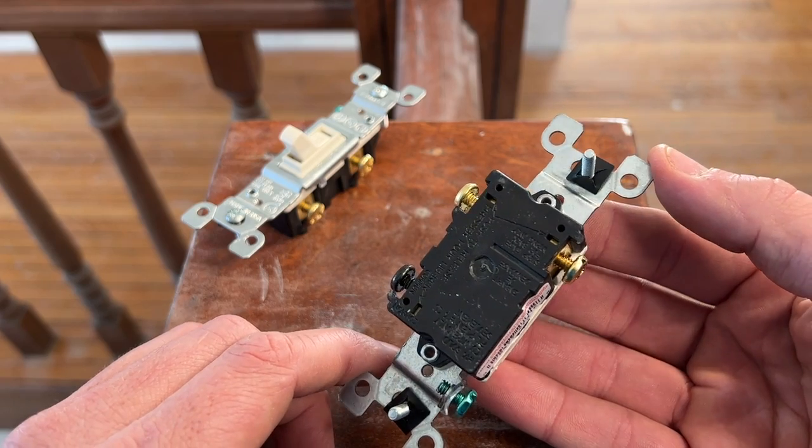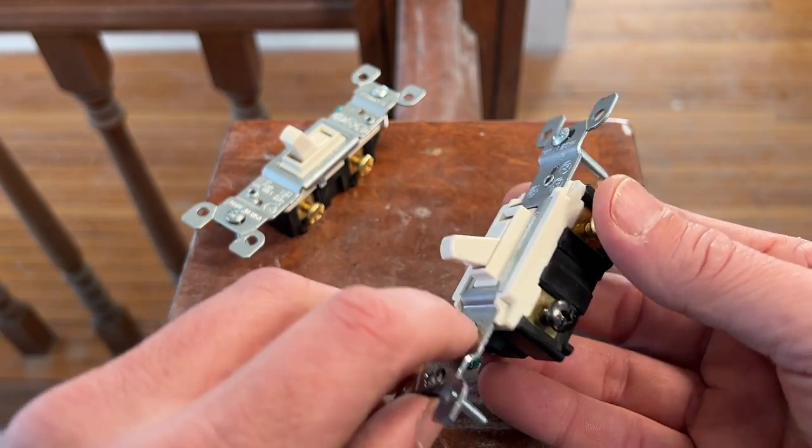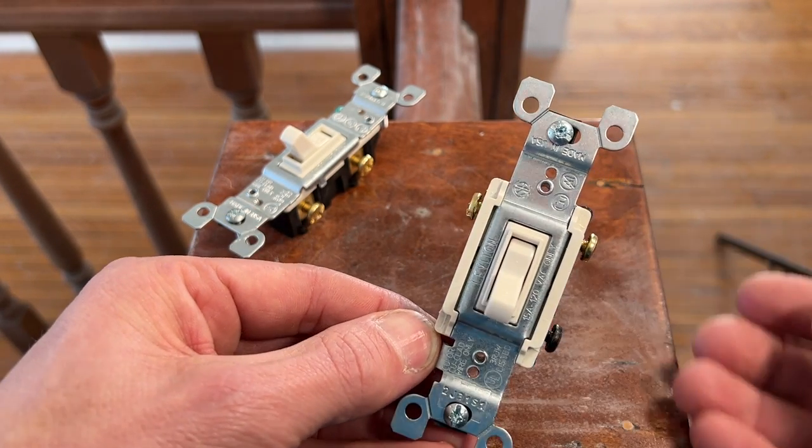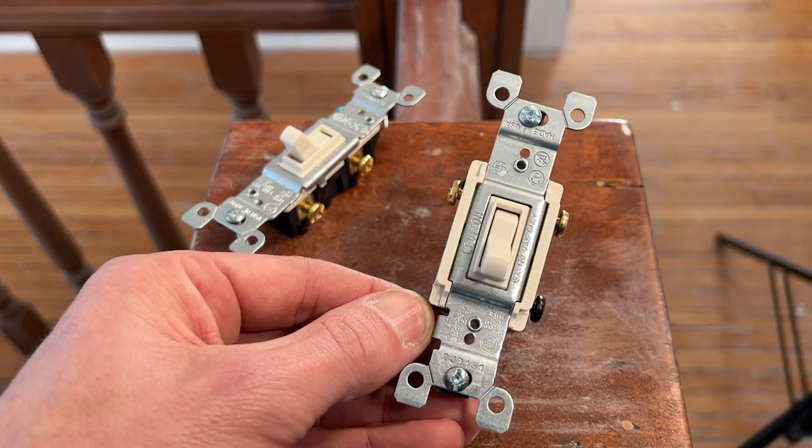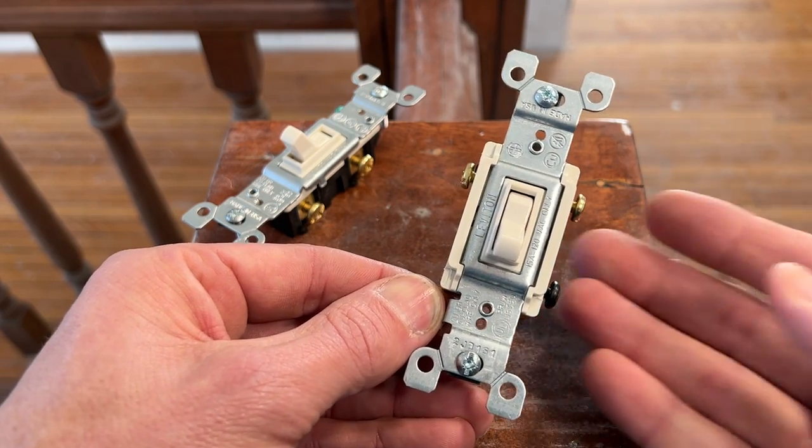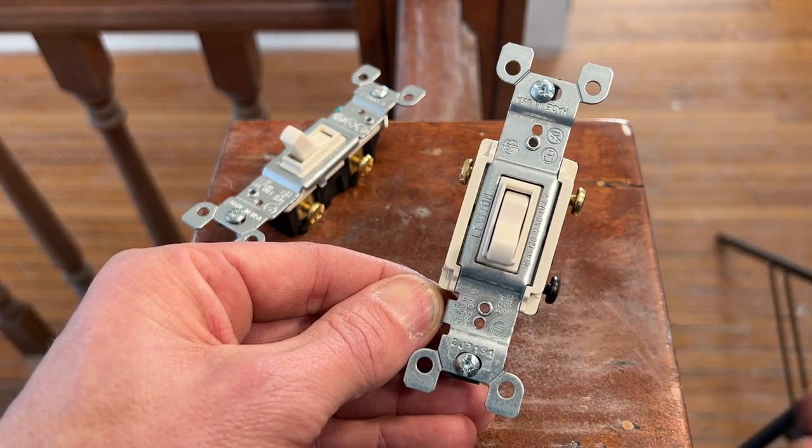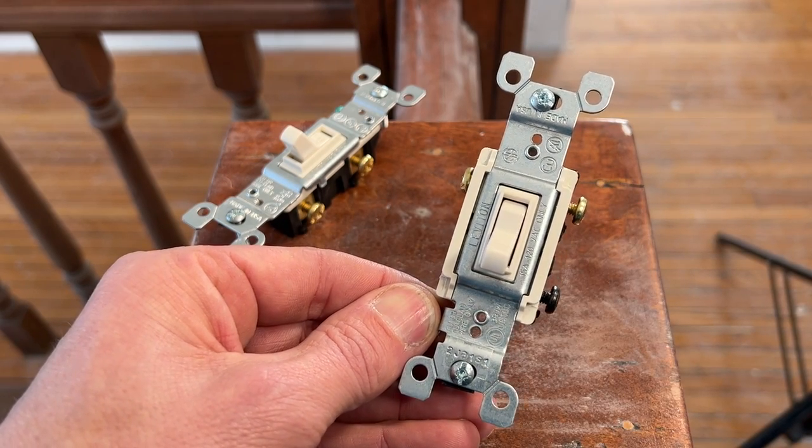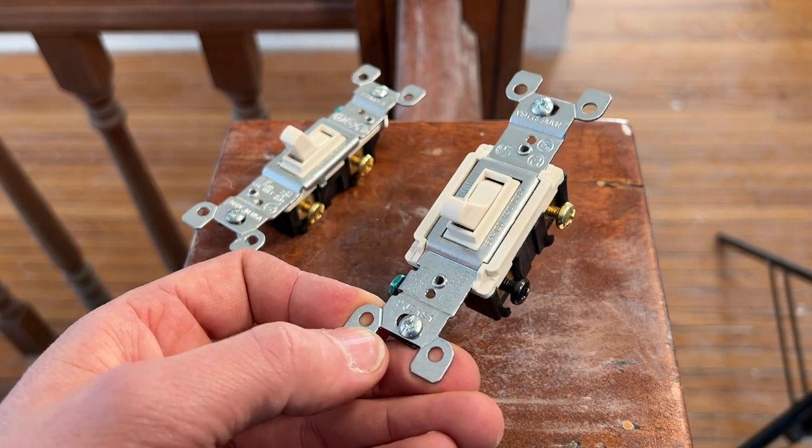If you exclude your ground terminal, the three-way just indicates the number of terminals you'll expect on that light switch. And as such, if you get a four-way light switch, you guessed it, you're going to have four terminals on that light switch.